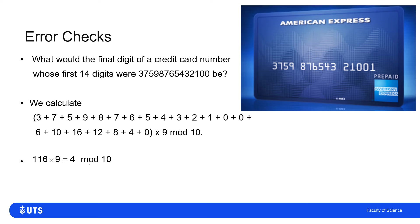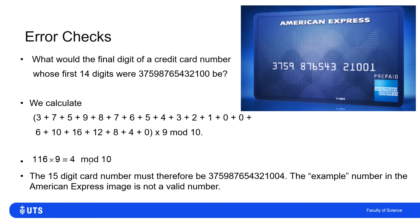When I do that — adding up all the numbers, then adding twice the odd-positioned numbers — I get 116. I multiply that by 9, and I can see straight away that a number ending in 6 multiplied by 9 will end in 4, so it's equivalent to 4 mod 10. So this is not a valid credit card number. A valid 15-digit card starting 3 7 5 9 would have to end with check digit 4, not 1.